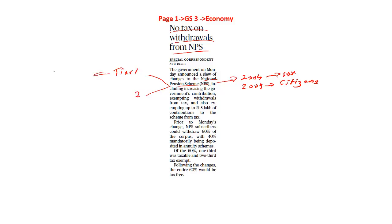In Tier 1, you would not be able to withdraw the money that you have deposited in this particular account until and unless there is an exceptional or special case — such as critical illness or a child's marriage. In Tier 2, it is different — it is basically like a savings account where they would be able to withdraw. So in the first scheme they would not be able to withdraw, in the second scheme they would be able to withdraw the money.